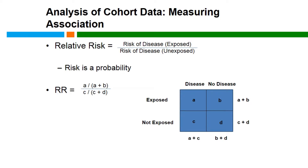A major advantage to the cohort design is the ability to estimate the relative risk — that is, the risk of disease among the exposed compared to the risk among the unexposed. In our simple 2x2 example, the risk of disease among the exposed is A over A plus B, while the risk of disease among the unexposed is C over C plus D. The ratio of the two is the relative risk for disease given exposure.